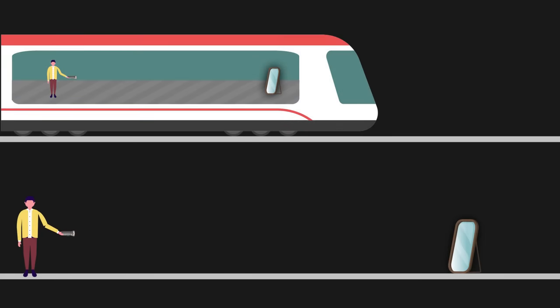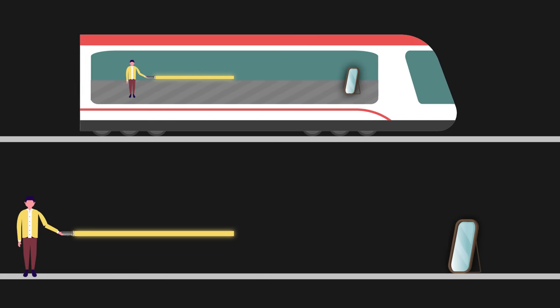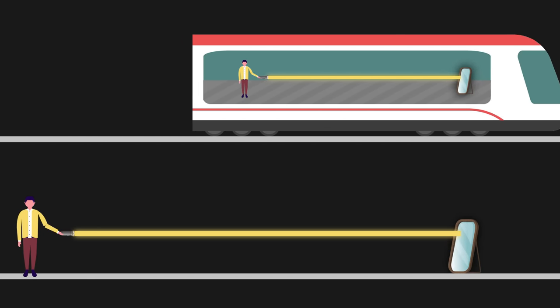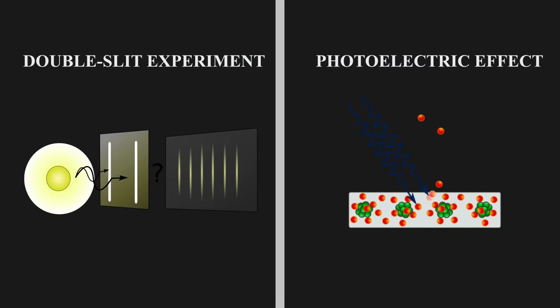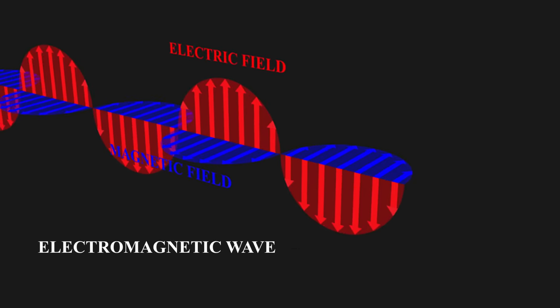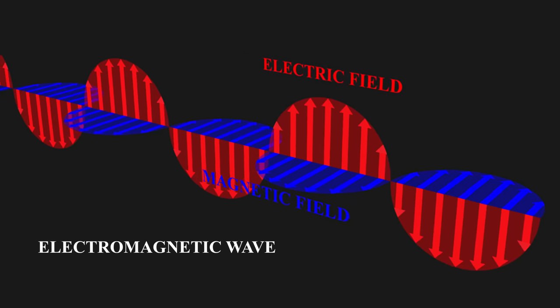It is a constant value in vacuum, no matter measured from what reference. Many of our explorations of modern physics are actually starting from light. As one type of electromagnetic waves, light has many wave properties.